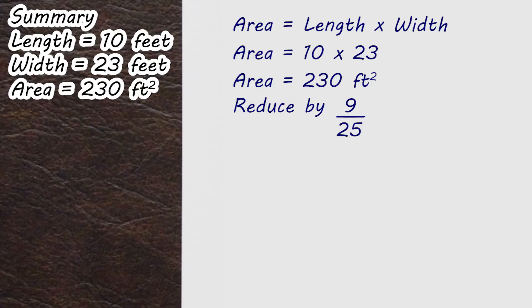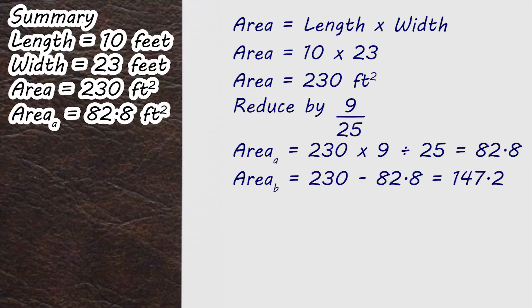So to start with, let's have a look at what 9 over 25 of a 10 by 23 area looks like. Algebraically this is easy to do - we take our 230 square feet, times by 9 and divide by 25 to give us an answer of 82.8 square feet.